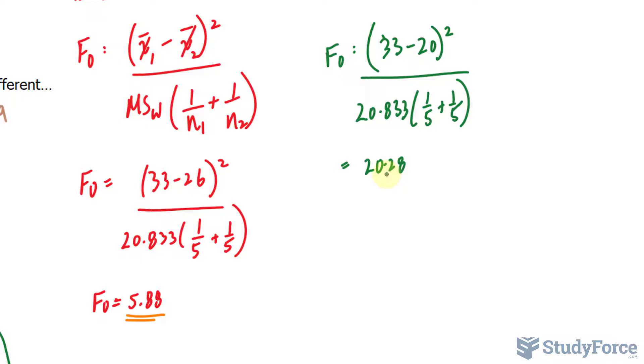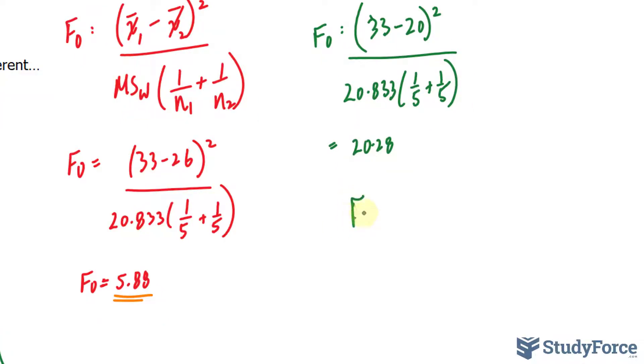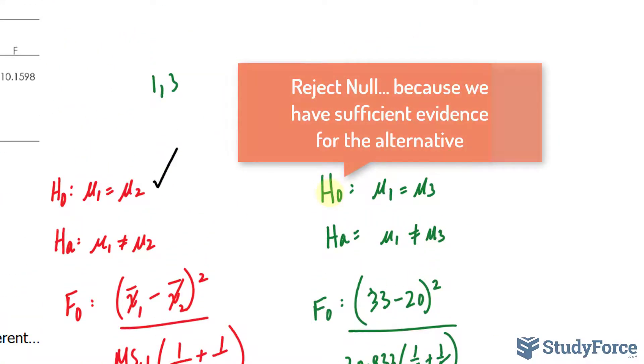Comparing 20.28 to 7.78, obviously F observed is larger than F critical, and if I show you this on a graph, the F critical 7.78 is here and 20.28 is over here. This falls in the rejection region, so we will be rejecting the null hypothesis in favor of the alternative.